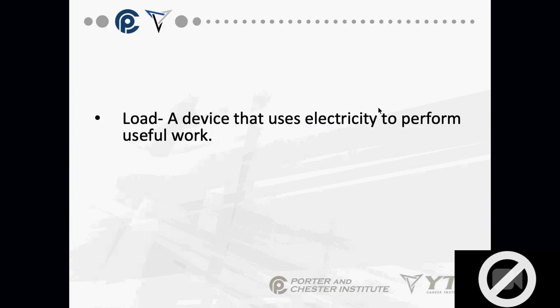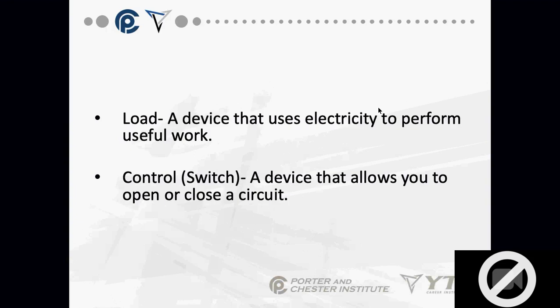A load is a device that uses electricity to perform useful work. A light bulb is a load — it uses electricity to light up a room. A motor is a load — it uses electricity to turn a belt, turn a fan, or power a compressor. A control is a device that allows you to open or close a circuit. It doesn't do work — a light switch is a control, and so is a mute button. It prevents or allows work to be done.